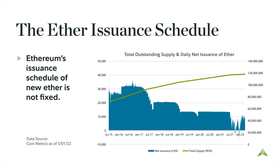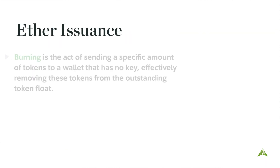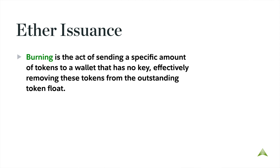To date, the issuance rate has been reduced multiple times. The addition of burning ETH as part of a recent upgrade has resulted in days where the net issuance of ETH is negative, or more ETH is burned than minted. Burning is simply the act of sending a specific amount of tokens to a wallet that has no access key, effectively removing these tokens from the outstanding token supply.